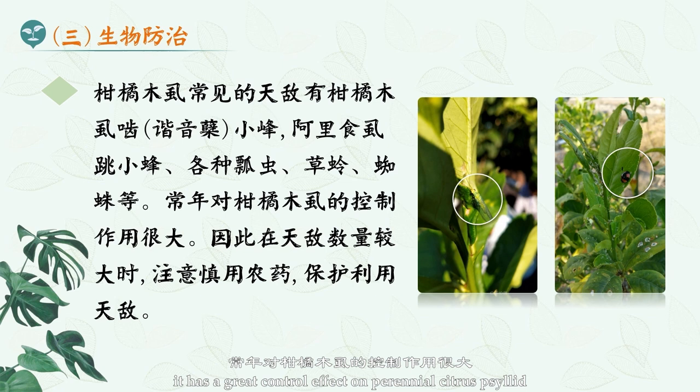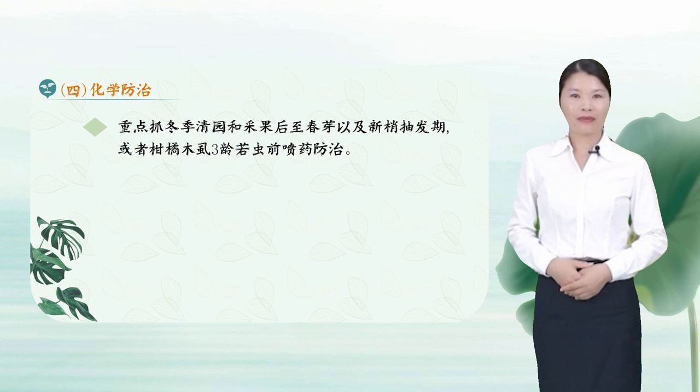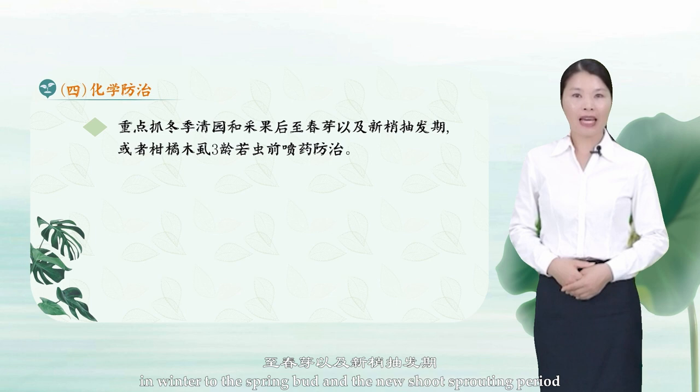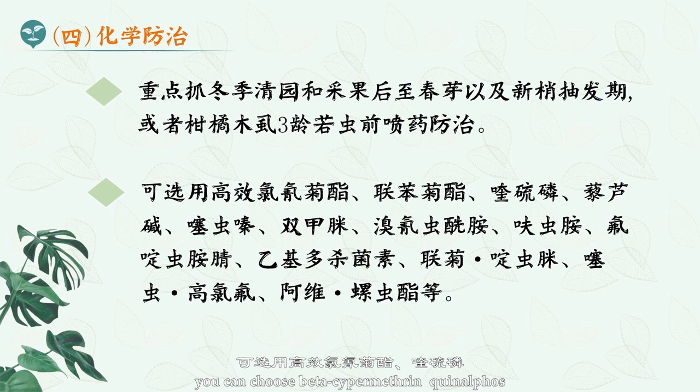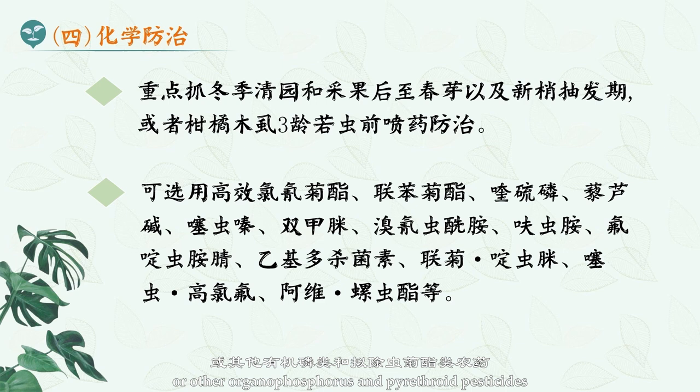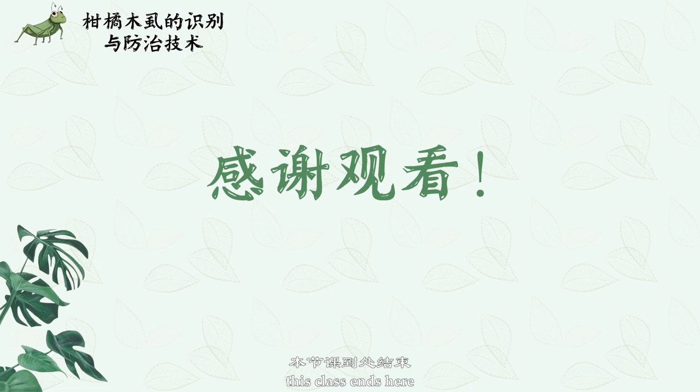Four: Chemical control. Focus on clearing the garden and picking fruit in winter through the spring bud period, and spray during the new shoot sprouting period or before the third instar nymph stage. Recommended pesticides include beta-cypermethrin, quinalphos, chlorpyrifos, chlorfenapyr, and thiamethoxam, as well as other organophosphorus and pyrethroid pesticides. This class ends here, thanks for watching.